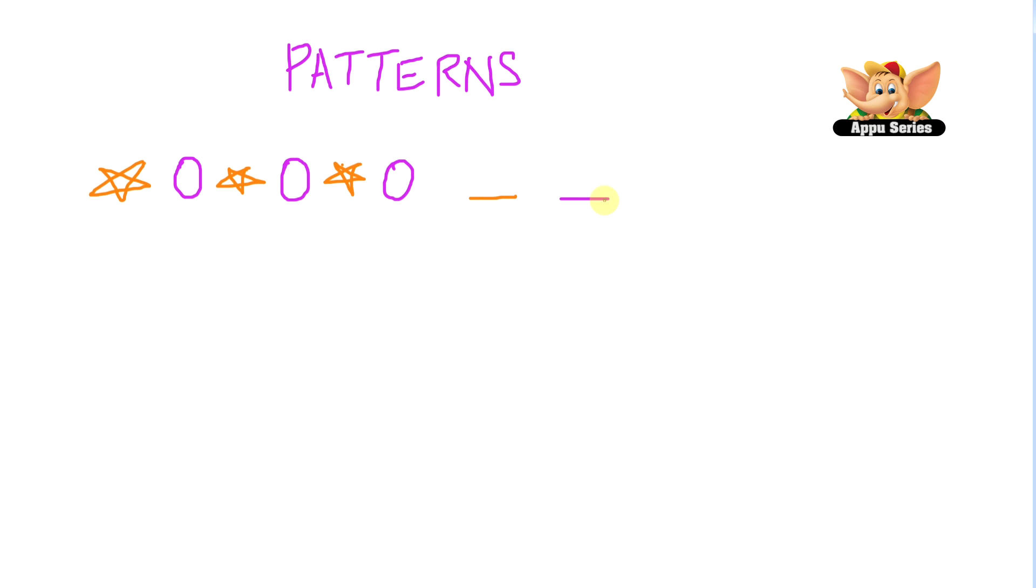What we have here is a star and an oval, then a star and an oval again. So these two shapes are being repeated here. So what do you think comes after the oval here? Observe the pattern carefully. You're right!